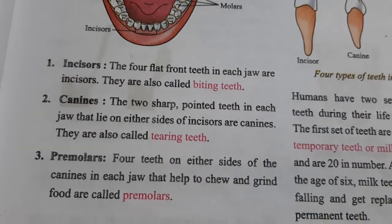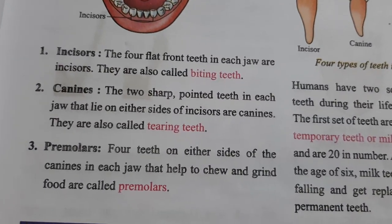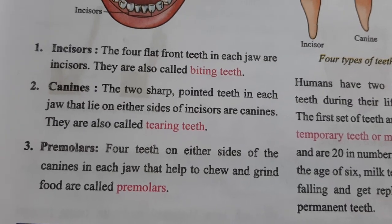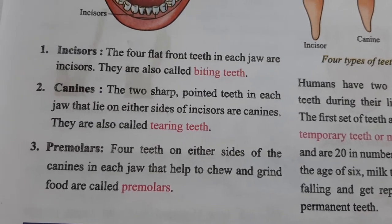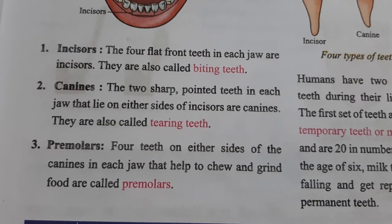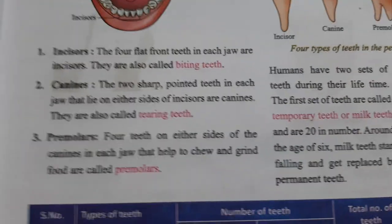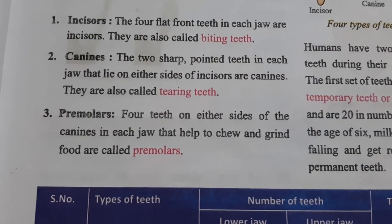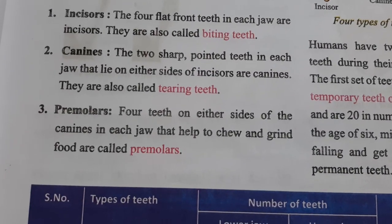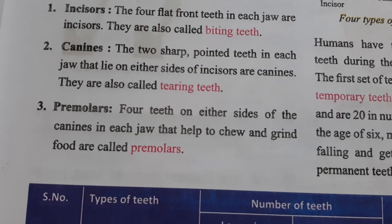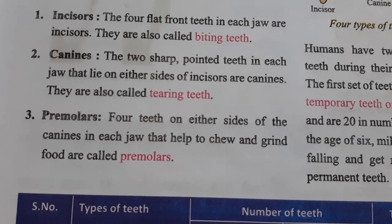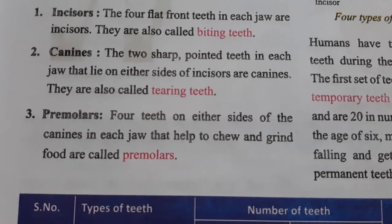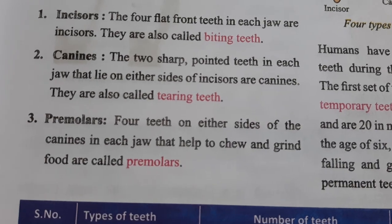Each type of teeth has different functions and different numbers. The four flat front teeth in each jaw are incisors, also known as biting teeth. The two sharp pointed teeth on either side of the incisors in each jaw are canines, also called tearing teeth.